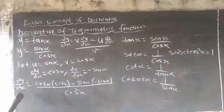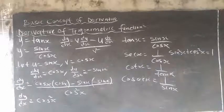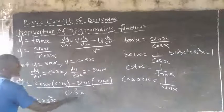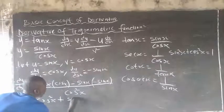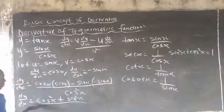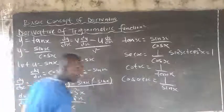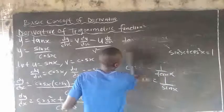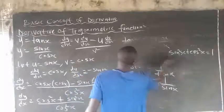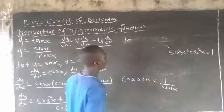Now I have to clear the brackets. So dy/ds equals cos s times cos s, which is cos squared s. Then minus sin s times minus sin s: minus times minus is plus, so sin s times sin s is sin squared s. All over cos squared s.